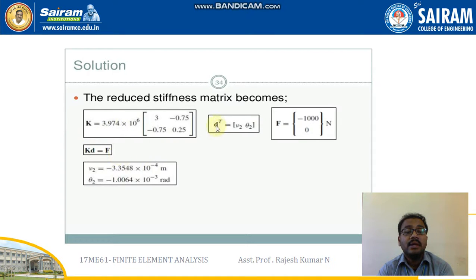The magnitude value minus 100, and moment is not given so it is 0. After simplifying this one I'll be getting v2 and theta 2 as minus 3.3548 into 10 power minus 4 meter, and theta 2 minus 1.0064 into 10 power minus 3 radians.